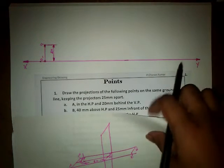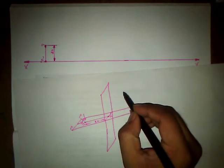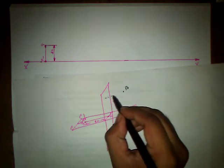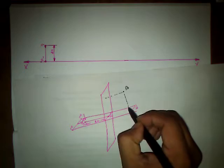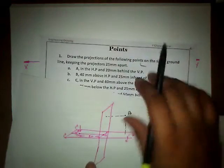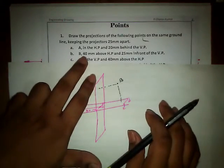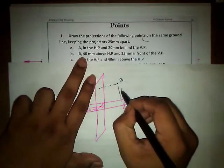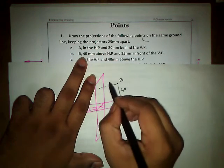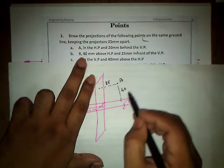So the point is going to lie over here in the first quadrant, that is point B. The point is 40mm above HP. So this distance is going to be 40mm and it is 25mm in front of VP. So this part is going to be 25mm.